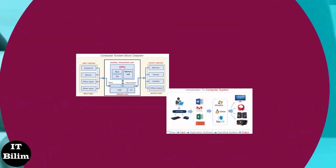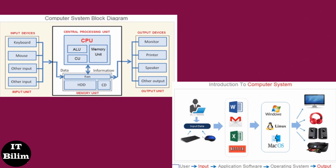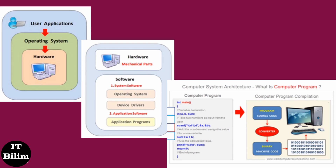Overview of computer systems: a computer system is defined as a digital electronics device that can be programmed to accept some inputs in terms of data, then process this data as per the program instructions, and provide the output in the desired format for some meaningful work. A computer system consists of both software components and hardware components. Hardware components are physical parts that we can touch and interact with, while software is necessary to manage the hardware. A computer program is an essential component of any computer system that directs a computer to perform various tasks. The computer system is programmable, meaning it will perform a task only as per the program instructions, and it needs a program written in a programming language to execute a particular task.